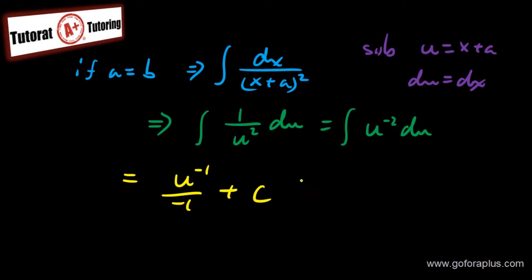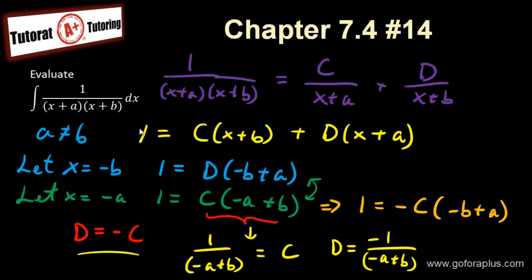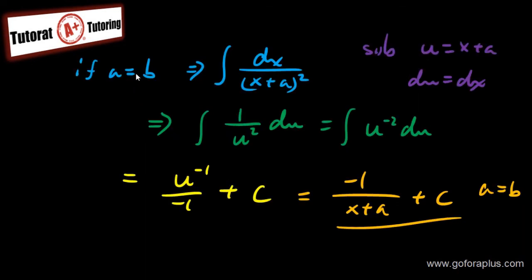So this is just minus 1, minus 1 over u, which is (x+a) plus c. So this is my answer if a is equal to b. So this is how we solve this problem here, if we don't know the variable of a and b. You use partial fraction if a is not equal to b. If a is equal to b, you can just use a simple substitution.